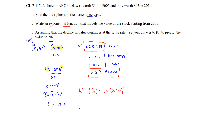Part C: For a prediction in 2020, that's 15 years after 2005, so we evaluate f(15) equals 60 times 0.944 raised to the 15th power. We get a value of approximately $25.28. So the stock is predicted to be worth $25.28 in 2020.